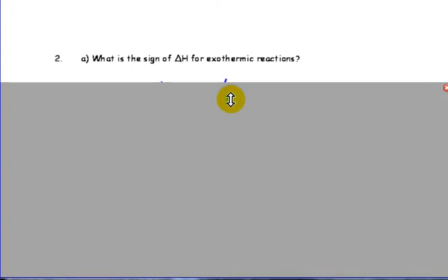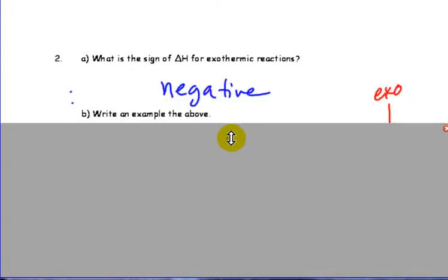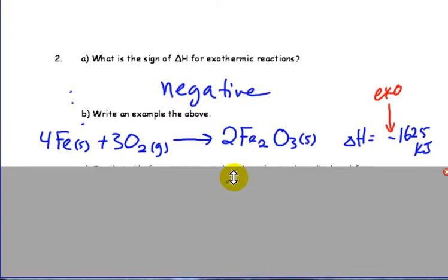If we look at exothermic reactions, we think of them as being negative because energy is released or lost by the system. So for example, the rusting of iron here involves the release of heat. So we can write it off to the side as simply enthalpy equals negative 1625 kilojoules, with the negative meaning that it's exothermic.